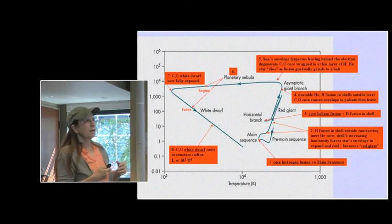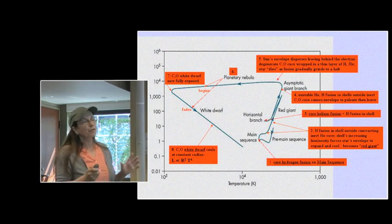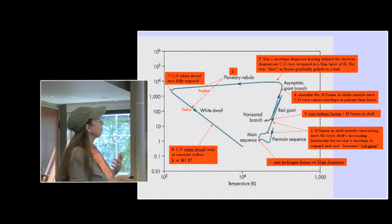A planetary nebula will probably stay visible about 50,000 years. That is the number I come across most often, that after 50,000 years they are so thin and tenuous that you really can't see them anymore.